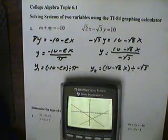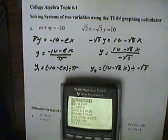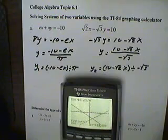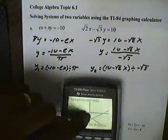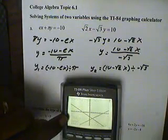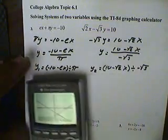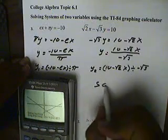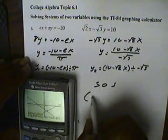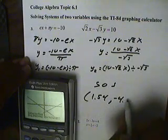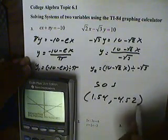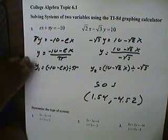Now, to find this intersection, I'm going to hit second function, calculate. Go to intersection, which is number 5. First curve, that's true, I want that to be my first curve. This is going to be my second curve. Yes, I want to guess at that point. And we have an intersection of, or a solution of this system. It'll be x is 1.54, and y is negative 4.52. And that's our solution of this system.